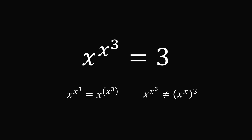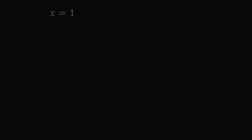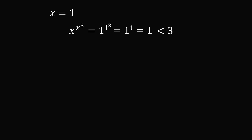Let's work out this equation by evaluating some values. If x is equal to 1, then x to the power of x to the power of 3 is equal to 1 to the power of 1 cubed. We first evaluate 1 cubed, which is equal to 1. So this is equal to 1 to the power of 1, which is equal to 1. This is less than 3, so when x equals 1 we have too small a value for x to the power of x cubed.